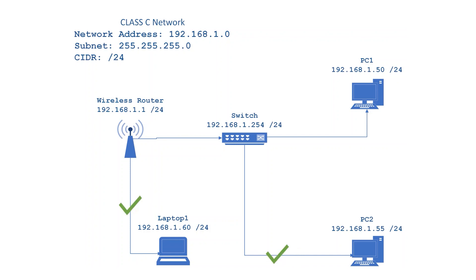Change the IP address of Laptop 1 to 192.168.1.60 with a slash 24, and that's all there is to it. For PC2, you simply change the subnet mask to slash 24, and you're set. After these changes, both Laptop 1 and PC2 can communicate across the network.